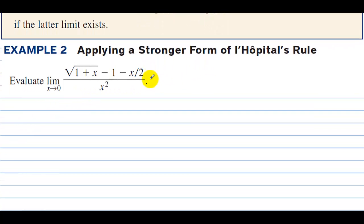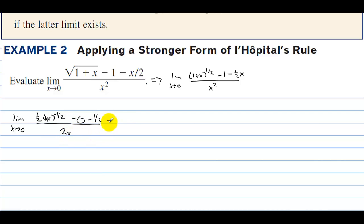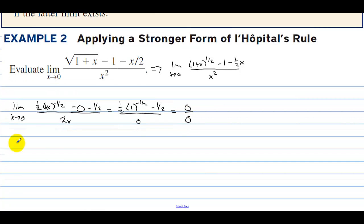Applying the stronger form of L'Hopital's Rule: let's take the limit as x approaches 0 of (1 plus x) to the 1/2, minus 1, minus (1/2)x, all over x squared. Taking the derivative, we have the limit as x approaches 0 of 1/2 times (1 plus x) to the negative 1/2, minus 0 minus 1/2, all over 2x. If we plug in 0, the top gives 1/2 times 1 to the negative 1/2 minus 1/2, which is 0, and the bottom is 0 — so we have another indeterminate form after taking the derivative.